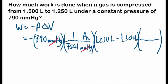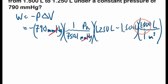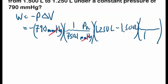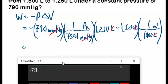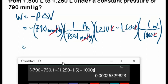We need another conversion: there are 1000 liters in one meter cubed. We write the conversion so liters cancel out, leaving us with meters cubed. Because we're in pascals times meters cubed, that gives us joules. Plugging into the calculator: negative 790 divided by 750.1, times (1.250 minus 1.500), divided by 1000. That gives us a very small number.